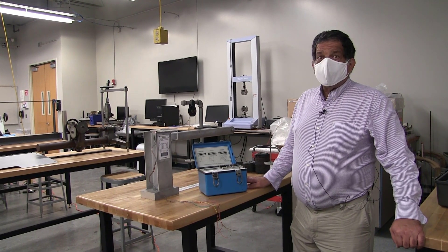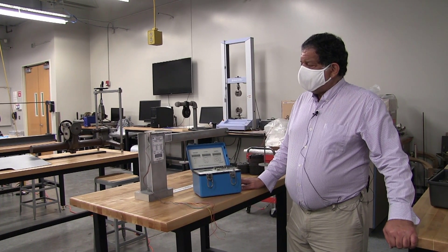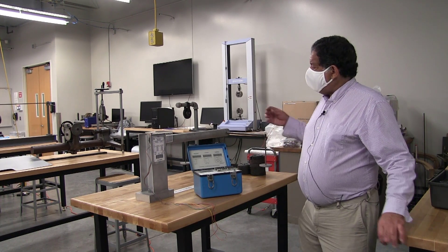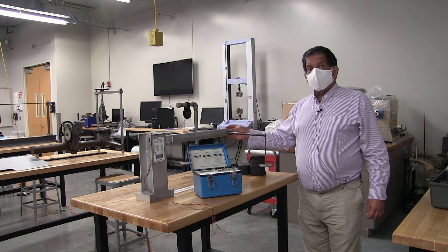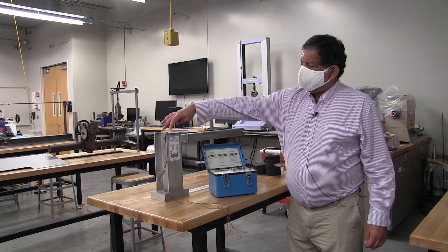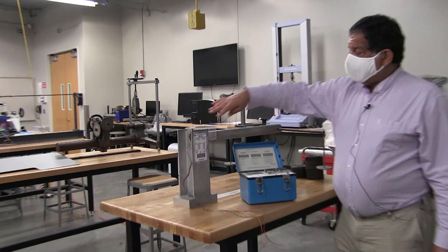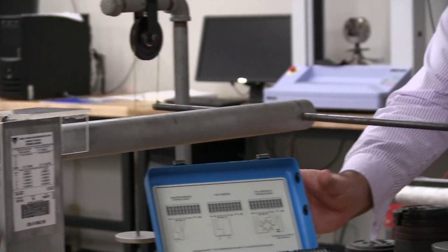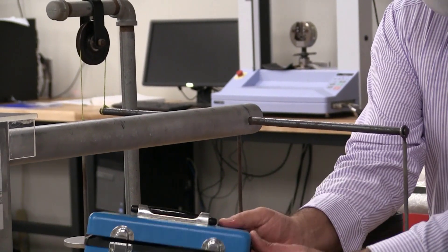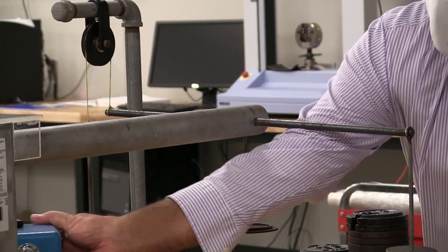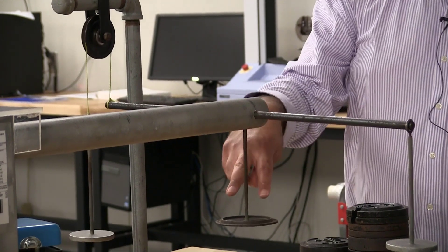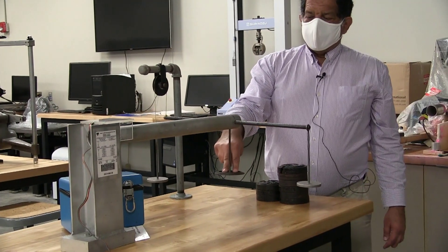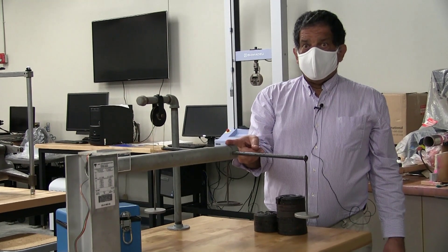Welcome to ME3501L's experiment on the combined loading apparatus. In this case, what we have is a hollow aluminum tube that is fixed to the support on this end. On this end, it's got three locations where we load it up. Let me move the strain gauge conditioner out of your path so that you can see it. It's got a central location over here, which is loaded dead center on the tube.